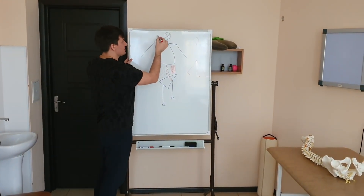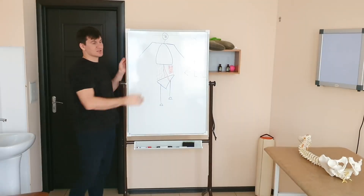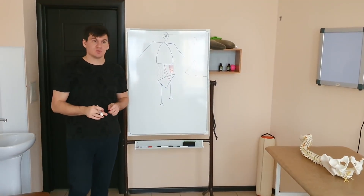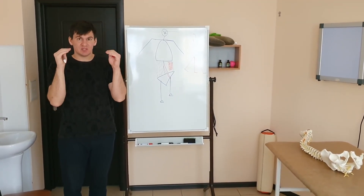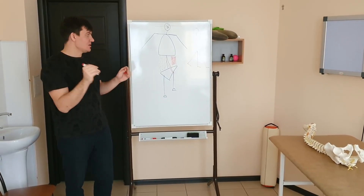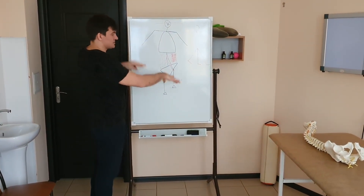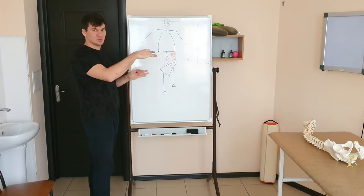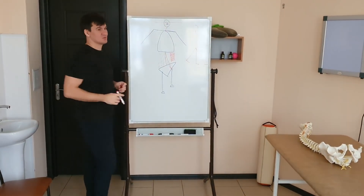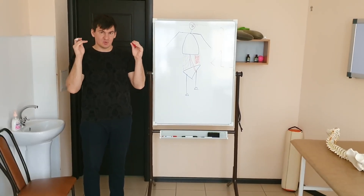Whenever we move, we always try to keep our eyeline parallel to the floor — this is what helps us maintain balance. No matter how much everything moves up and down or back and forth, the level of the eyes will always remain more or less horizontal to the floor.